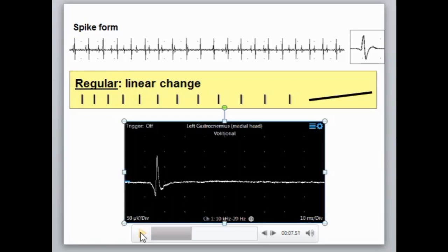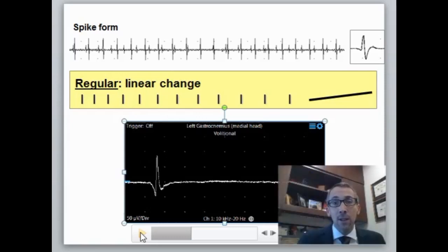So the answer to the question is yes: fibrillation potentials, in very rare instances in early denervation, can fire in an irregular firing pattern.